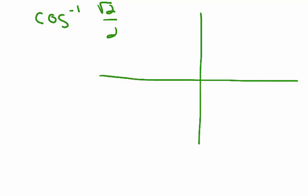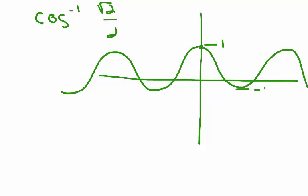Suppose I ask you to find the exact value for cosine inverse square root 2 over 2. Again, there is a horizontal line along the graph that will intersect the graph of y equals cosine of theta infinitely many times. So if we look at our graph for cosine, just our basic graph, which oscillates between 1 and negative 1, then you can see that any horizontal line we choose is going to pass through our graph infinitely many times.